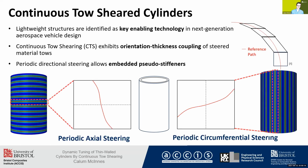In a design setting, we can introduce periodicity to the steering. As you can see in the two figures on the left, if we steer in the axial direction periodically, we can embed circumferentially aligned pseudo-hoops. Likewise, if we steer circumferentially, we can embed stringers in the longitudinal direction.